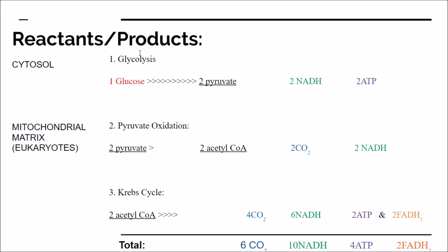Summing everything up: one molecule of glucose through glycolysis, pyruvate oxidation, and the Krebs cycle gives you a total of six CO2, ten NADH, four ATP, and two FADH2 molecules. That's the basic straightforward version of the Krebs cycle. If you'd like a more in-depth series looking at each individual step, I can do that. I hope you found this useful — I'll see you in the next video, and as always, best of luck studying everyone.